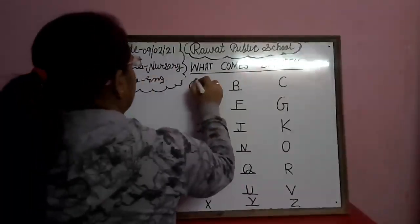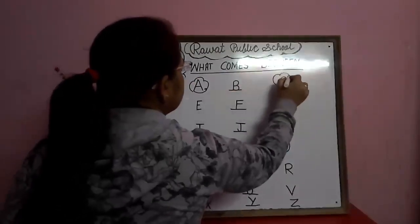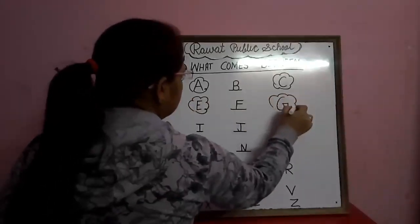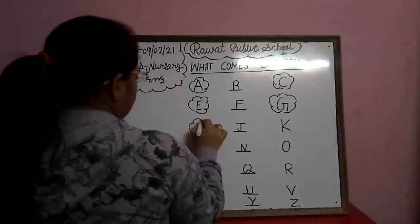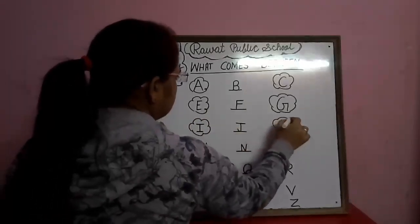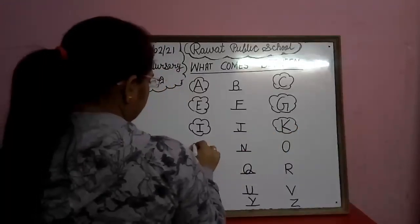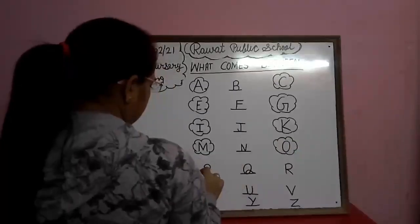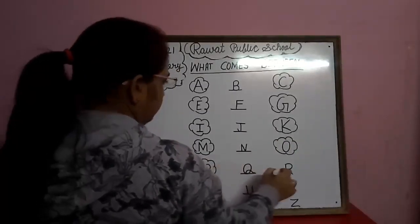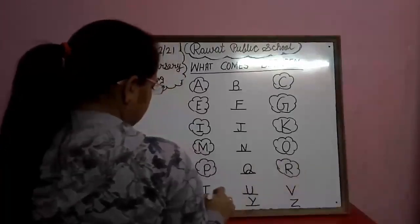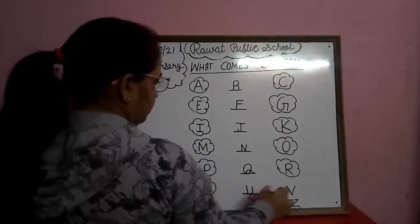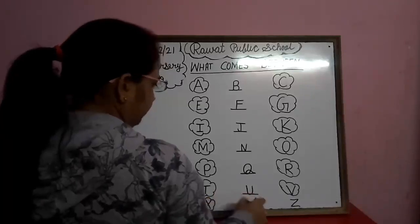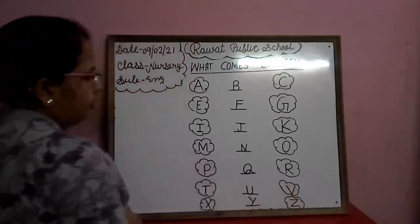Okay, let's review. A, B, C. E, F, G. I, J, K. M, N, O. P, Q, R. T, U, V. X, Y, Z.